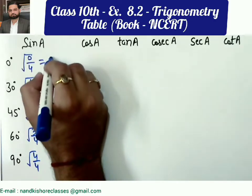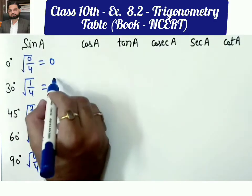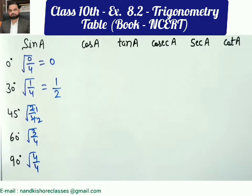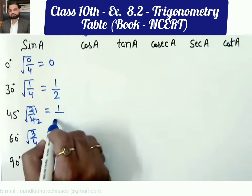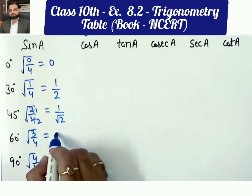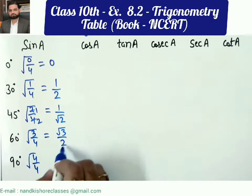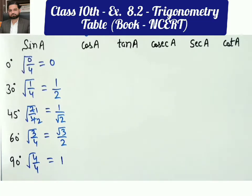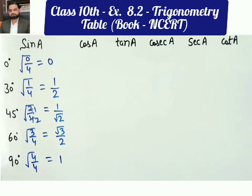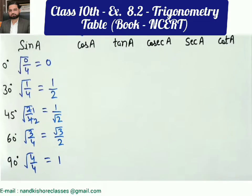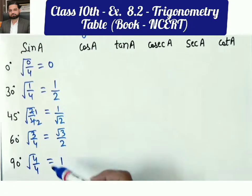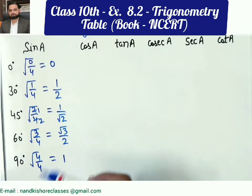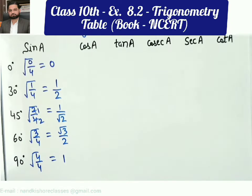Then put a square root over each fraction. The square root of 0/4 is 0. Root of 1/4 gives 1/2. Root of 2/4 simplifies to 1/√2. Root of 3/4 gives √3/2. And root of 4/4 is 1. So the five values of the sine column are: 0, 1/2, 1/√2, √3/2, and 1.